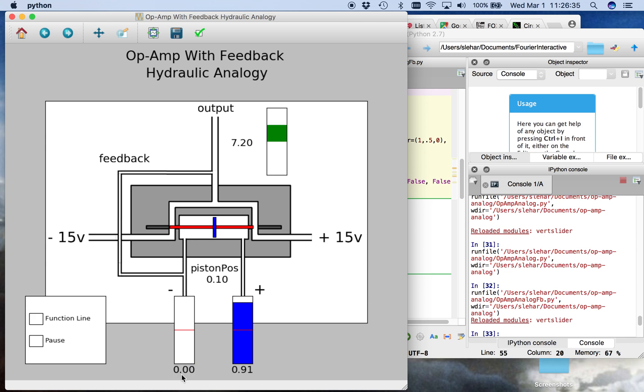If we make the inverting input zero, then this becomes a follower, where the output voltage is a simple copy of this input voltage.